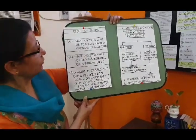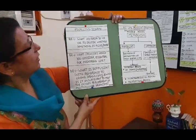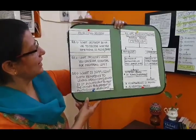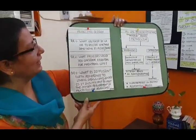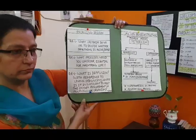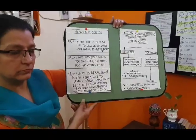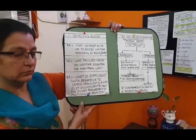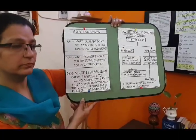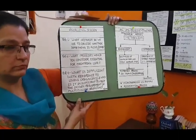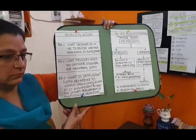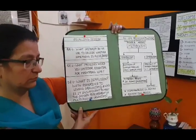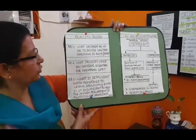My second question is: what processes would you consider essential for maintaining life? There are 6 processes considered essential for maintaining life: nutrition, respiration, transportation, excretion, and control and coordination.